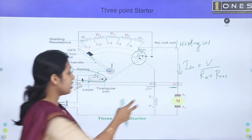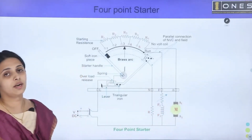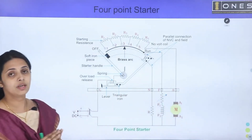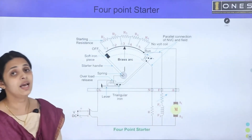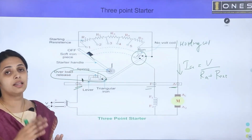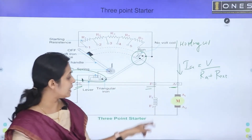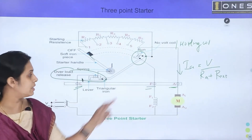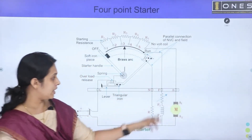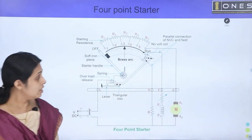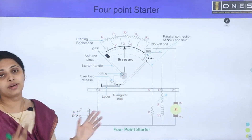In a 4-point starter, there are four terminals: L (line), N (no-volt coil), F (field), and A (armature). The advantage over the 3-point starter is that speed control above base speed is possible by weakening the field current. The holding coil is on a separate independent circuit, so reducing field current does not affect the holding coil.